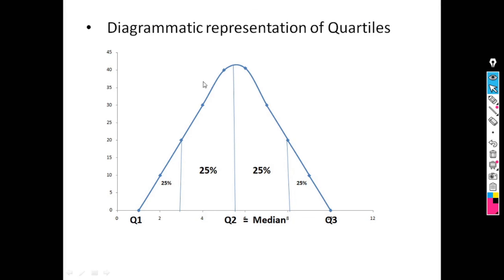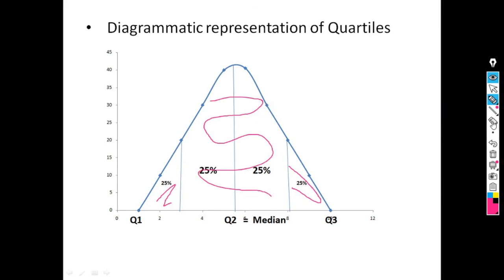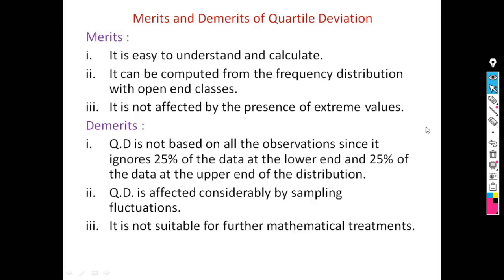Because the formula uses only Q3 and Q1, the middlemost portion of the distribution is effectively deleted, so it is not based on all observations. Additionally, quartile deviation is affected considerably by sampling fluctuation, and it is not suitable for further mathematical treatment.